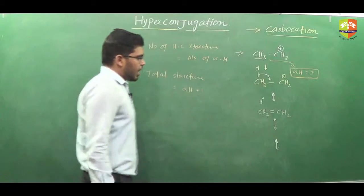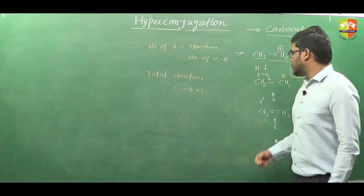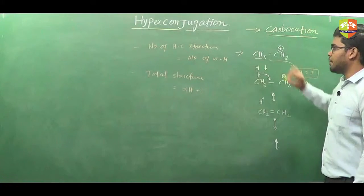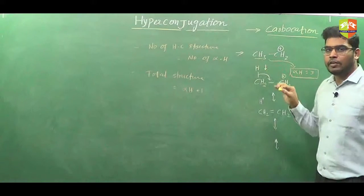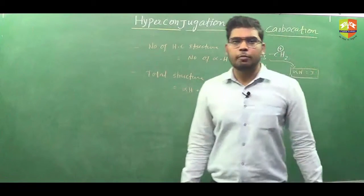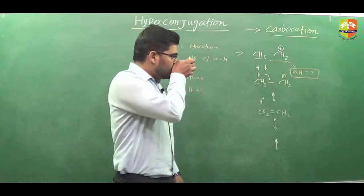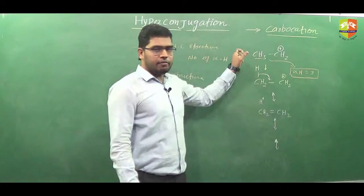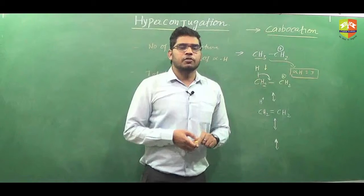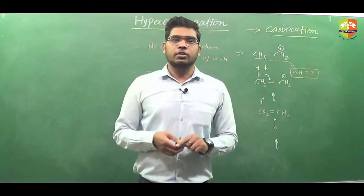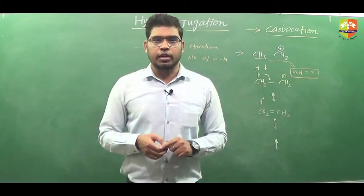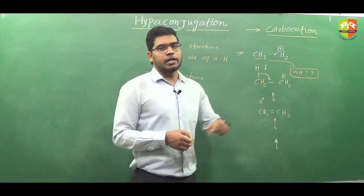In carbocation, hyperconjugation is possible. Remember that in this hyperconjugation, the sigma bond — which is comparatively a stronger bond — is converting into pi, which is a weaker bond. So when we compare hyperconjugation in various compounds, bond strength also will have a role. For example, if you have isotopes of hydrogen — CH, CD, and CT — according to bond strength we will compare the hyperconjugation, because we have to break the sigma bond and it is converting into pi.